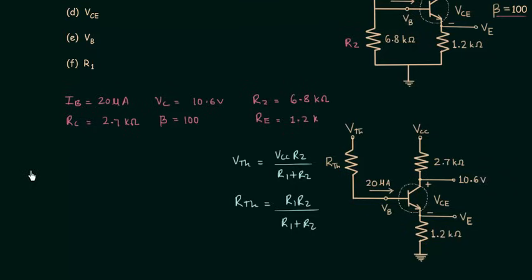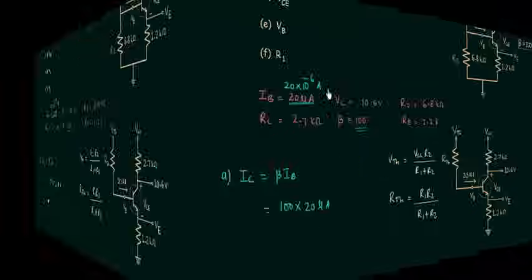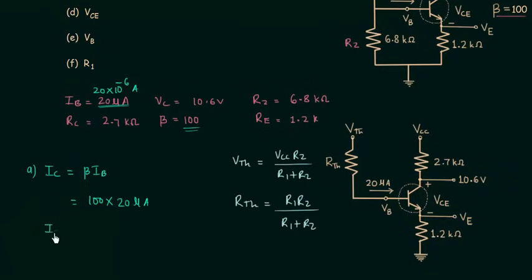Now we will solve Part A to calculate the collector current. Collector current IC is equal to beta times IB. Beta is 100 and IB is 20 microamps, so we have 100 multiplied with 20 times 10 to the power minus 6 amps. The collector current IC is equal to 2 milliamps.